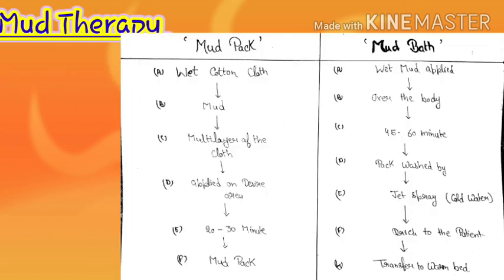There are two methods of mud application: mud pack and mud bath. For mud pack, take a wet cotton cloth, wet it in mud, generate multiple layers of the cloth, apply it on the desired area, and leave it for 20 to 30 minutes. The top of the cloth should remain moist.